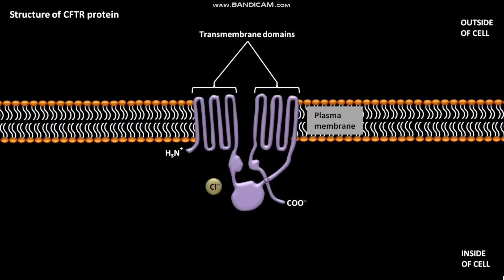The CFTR protein also has two nucleotide binding domains. These nucleotide binding domains act as binding sites for ATP. ATP provides the energy to drive transport of chloride ions across the plasma membrane.